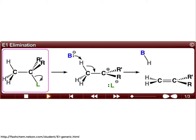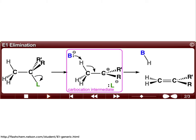In the first step of the reaction, that leaving group leaves, with the C-leaving group bond breaking and forming a carbocation intermediate.